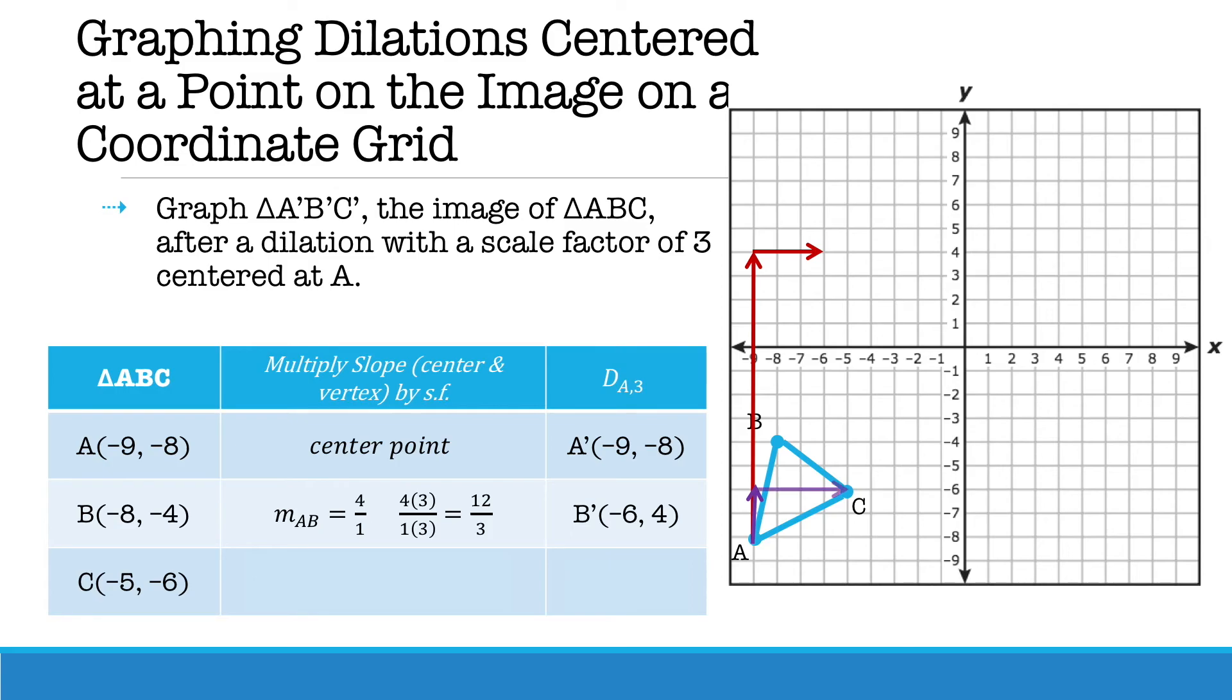Then we're going to do the same thing to C. We're going to count up 2 and to the right 4 and when we multiply the numerator and denominator by our scale factor we now get a new slope of 6 over 12 resulting in C' which is (3, -2).